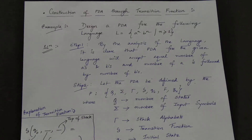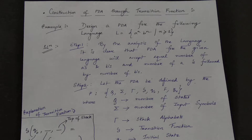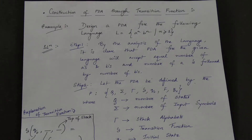Welcome to the video lecture series on Theory of Automata and Formal Languages. We are in Unit 4, dealing with Pushdown Automata. This is Lecture 3, where we will understand the construction of a PDA by means of transition function. I will deal with three examples, and also show one or two questions with the transition graph.